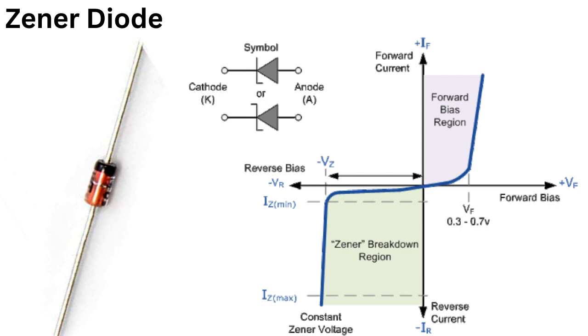For example, a Zener diode with a temperature coefficient of -2mV/°C will decrease its Zener voltage by 2mV for every degree Celsius increase in temperature.